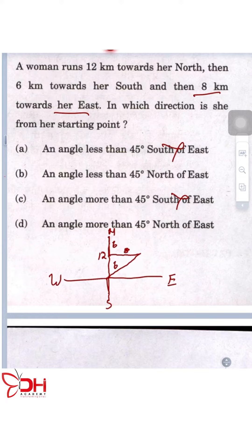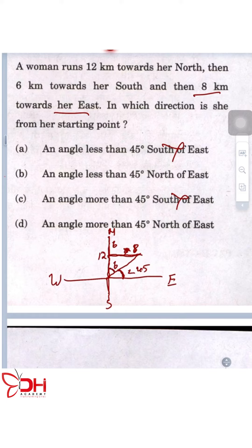We know the Pythagorean theorem. If the north component is 6 and the east component is 8, the angle from north will be more than 45 degrees, and the angle from east will be less than 45 degrees. If instead of 8 this was 6, it would have been exactly 45 degrees. But since the east component is 8 and north is 6, the angle from north is more than 45 degrees, meaning the angle from east is less than 45 degrees. So the correct option is an angle less than 45 degrees.